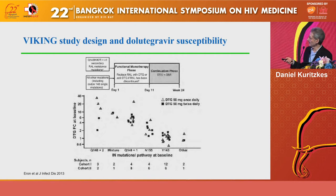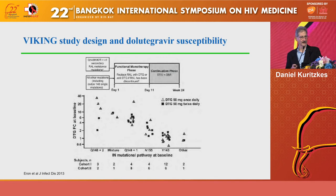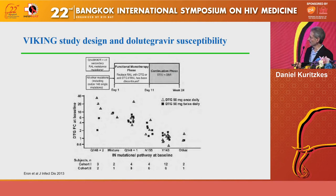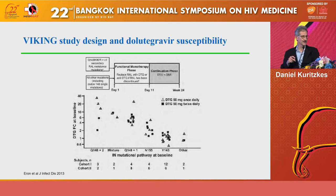Fold resistance to dolutegravir increases with increasing numbers of mutations, particularly when the Q148 mutation is included. The study found that dolutegravir administered twice daily had a better success rate than once daily, hence the recommendation to use dolutegravir twice a day in the setting of prior integrase inhibitor resistance. This is a somewhat soft result, however, because the highest levels of resistance were in the once-daily arm, so there wasn't parity in resistance levels between the groups.